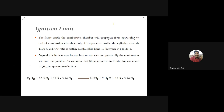Now we look at the ignition limit. We already know lean mixture means fuel quantity is less compared to air, and rich mixture means fuel quantity is higher than air proportion. The ignition has a limit: the range is 9:1 to 21:1 air-fuel ratio. Beyond this range — either lean or rich — the flame will not ignite. Within this range, the flame propagates and produces ignition inside the combustion chamber.